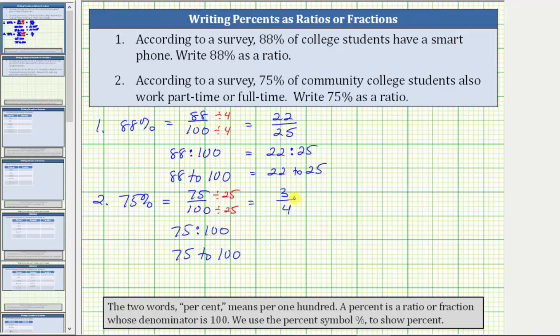We can say three-fourths of community college students also work part-time, or we can say three out of four community college students also work full or part-time. And as a ratio, we can use a colon, as well as the word two. I hope you found this helpful.